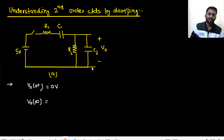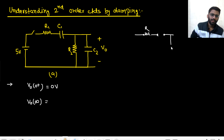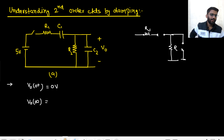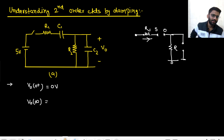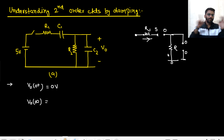At t=infinity, both capacitors will be open-circuited. This is resistance R1 and this is resistance R2. There is no condition of open-ended here because the current is 0, meaning this will be 5 volt, and this voltage travels through the resistor making V0 = 0 as well. There is no open-ended condition.